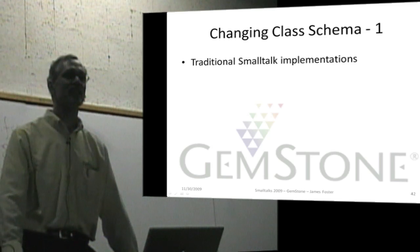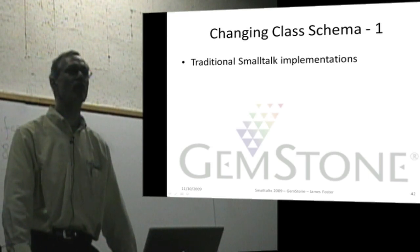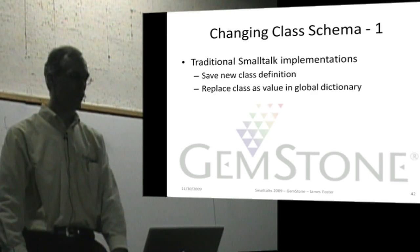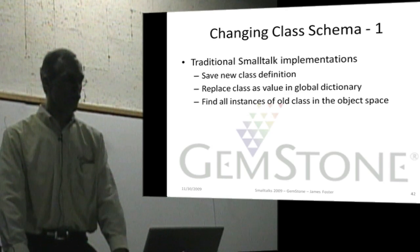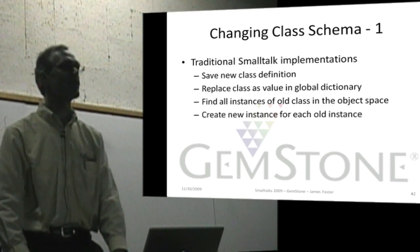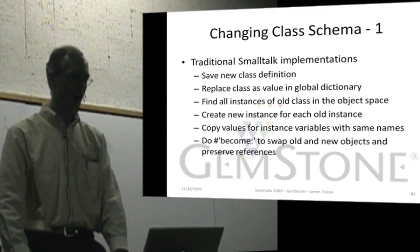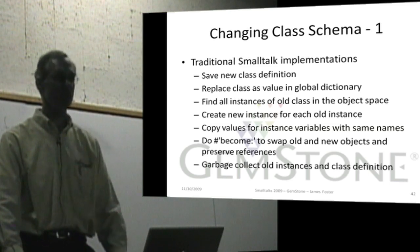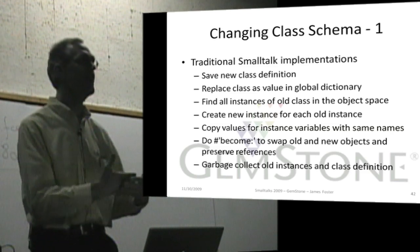Now, one of the things that we find in Gemstone is changing class schema. How do you modify the class schema? Well, in traditional Smalltalks, you save the new class definition, and when you do, it replaces the class as a value in the global dictionary. When you do that, it finds all instances of the old class in the object space, creates new instances based on the new class definition for each old instance, copies values across, does a become to swap the old objects and the new objects and preserve the references, and then does a garbage collect of the old instances and class definition. So this is what happens in traditional Smalltalk when you save a new class definition.